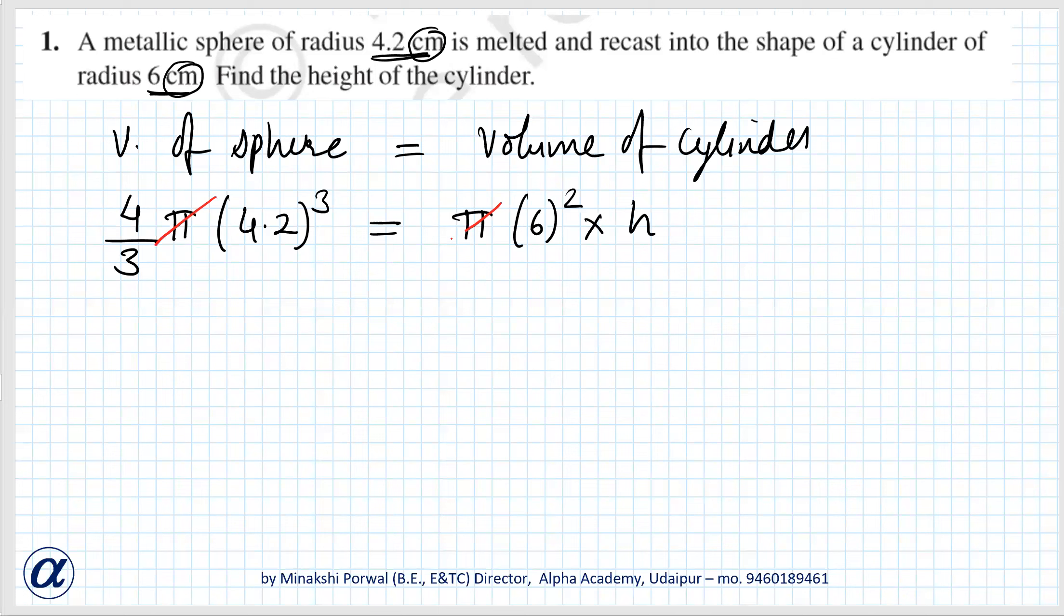Pi and pi cancel. H will be equal to... we'll keep h on one side and rest everything will move, so 4 into 4.2 into 4.2 into 4.2 upon 3 into 6 into 6.